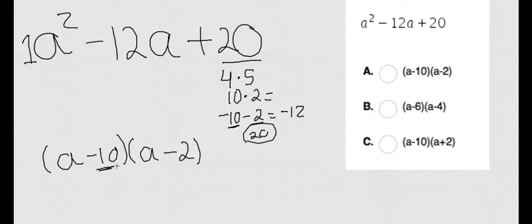Now you can check it. Negative 10 minus 2 is negative 12. Negative 10 times negative 2 is positive 20. Awesome.